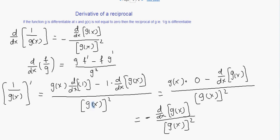Therefore, the derivative of a reciprocal is equal to negative the derivative of the denominator divided by the square of the denominator.